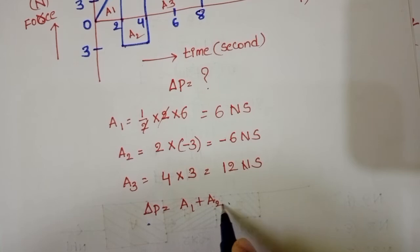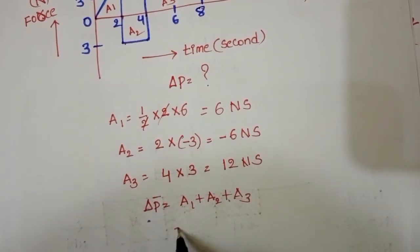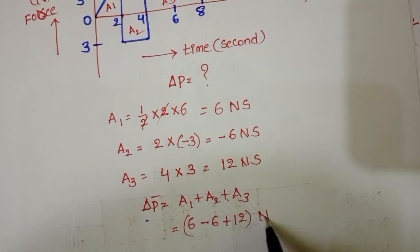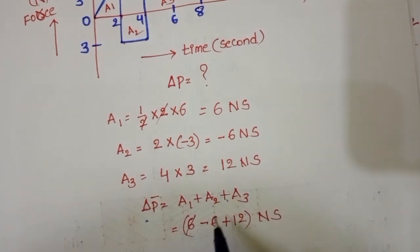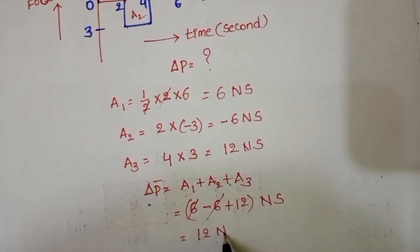A1 plus A2 plus A3. That equals 6 minus 6 plus 12 Newton seconds. Plus 6 minus 6 get cancelled, that equals 12 Newton seconds.